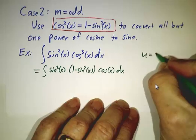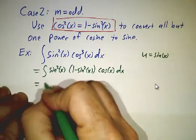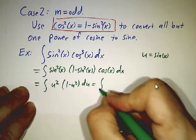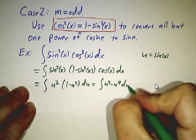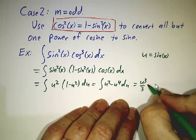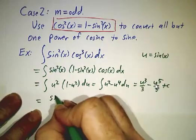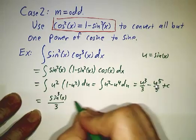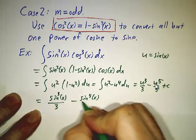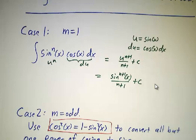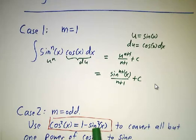Then as before, we let u equal sin of x. This becomes the integral of u squared times 1 minus u squared du, which is the integral of u squared minus u to the fourth du. That's u cubed over 3 minus u to the fifth over 5, plus a constant. Spelled out, that's sin of x cubed over 3 minus sin of x to the fifth over 5, plus a constant.